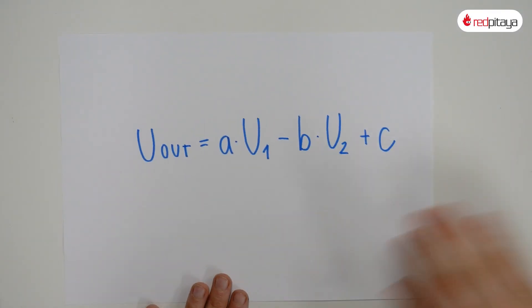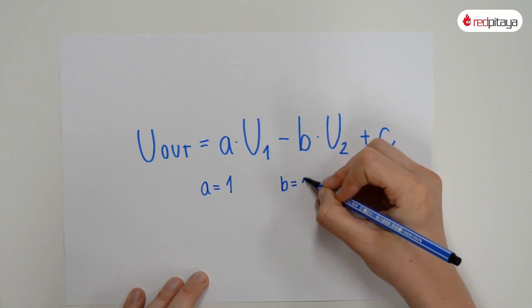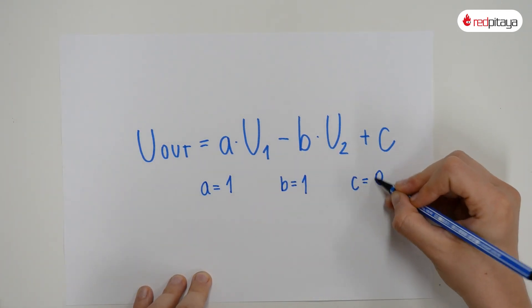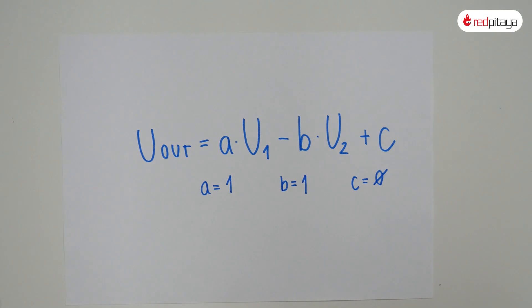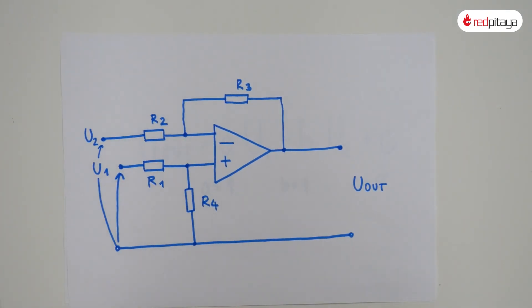What I will tell you about is how to subtract one voltage from another. How to build a voltage subtractor, or more formally, a differential amplifier. The circuit will have to execute the following function, where A and B should be 1 and C 0.